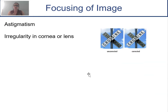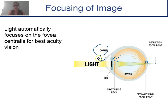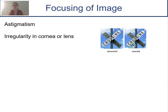Astigmatism is an irregularity in the cornea or the lens. When light comes in, it goes through the cornea and the lens, and if there's any bump or rough spot on either of these, it makes the image blurry. Astigmatism just makes things look a little blurry — you can see the difference between corrected and uncorrected. Usually this can be corrected with laser surgery, glasses, or contacts.